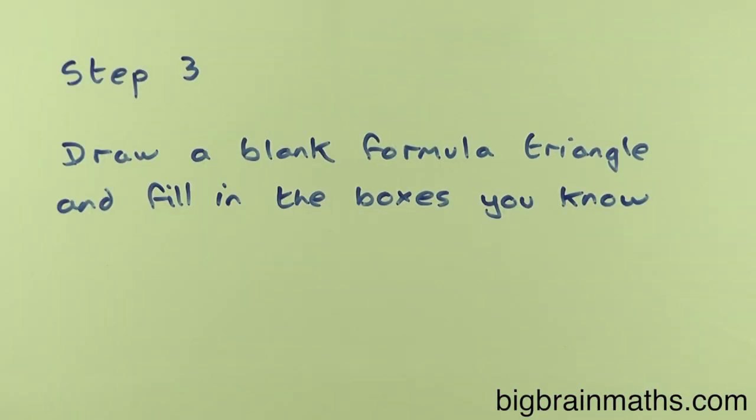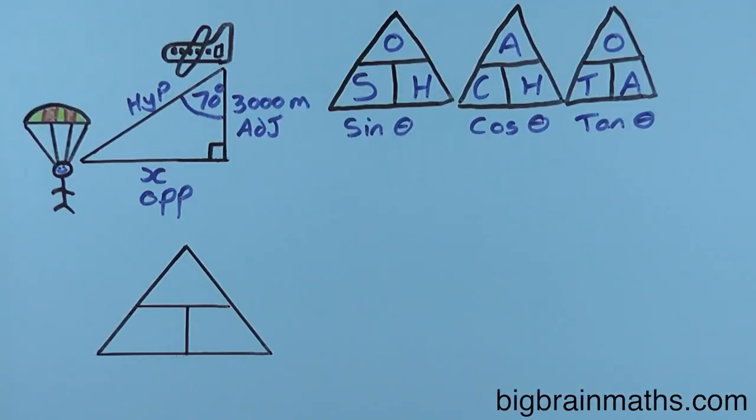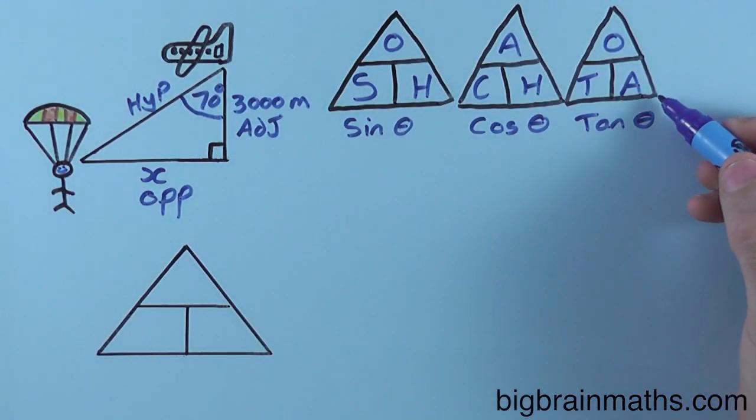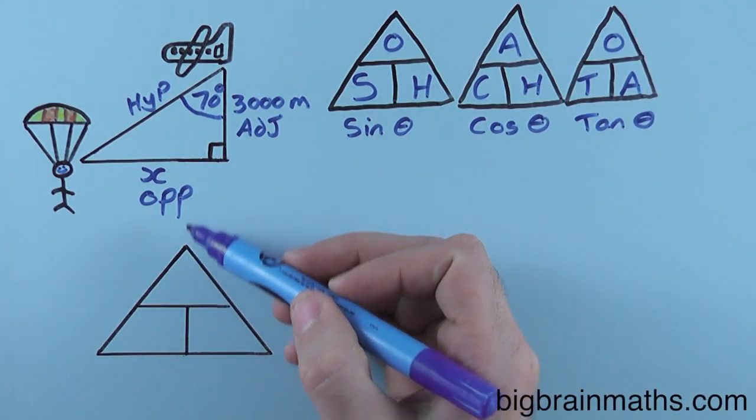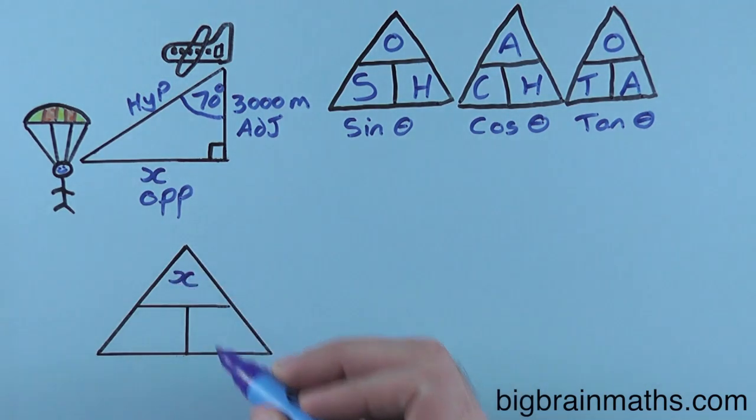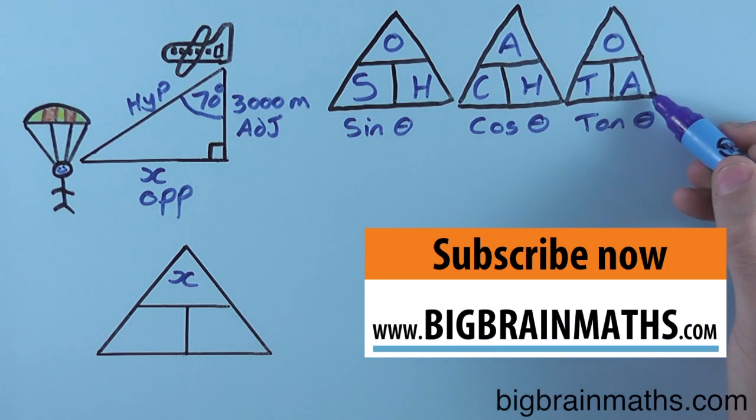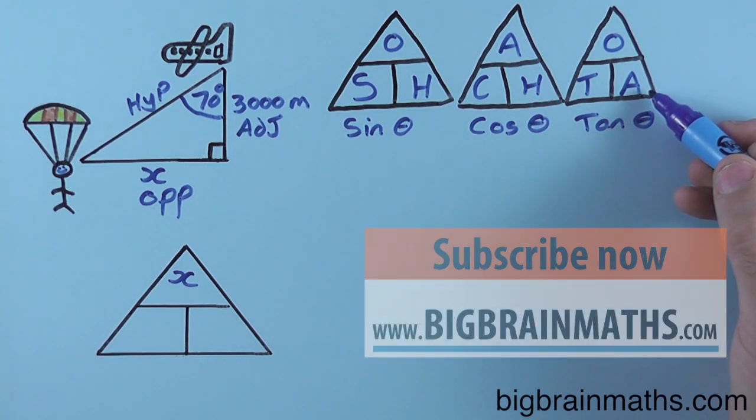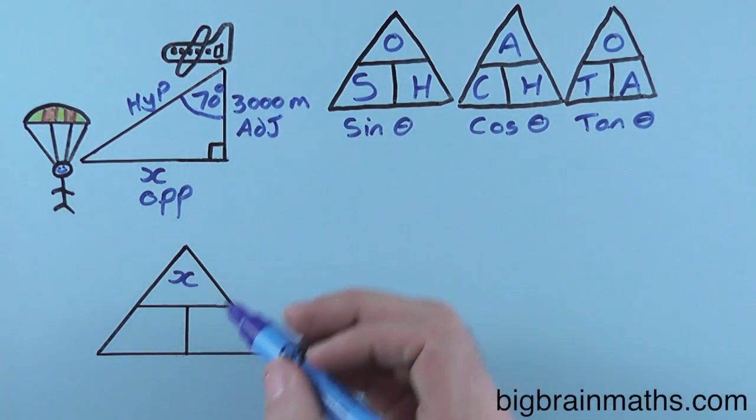Step 3: Draw a blank formula triangle and fill in the boxes you know. Now, we're using the tan triangle, which says the opposite belongs in the top box. I don't know my opposite, but I do know it's called X, so I'm going to put X in the top box. The adjacent goes in the bottom right-hand box, and the adjacent in this question is 3000.